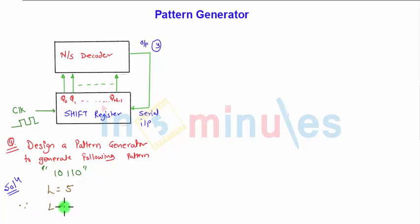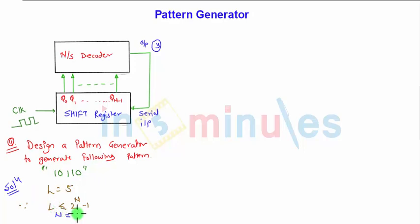Since L should be less than or equal to 2 raised to n minus 1, depending on this formula the value of n will be equal to 3. So the number of flip-flops, or the number of shift registers required, will be 3. A 3-bit shift register will be required here.